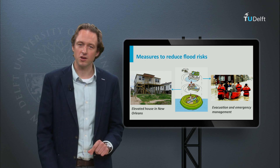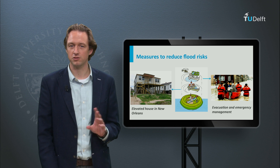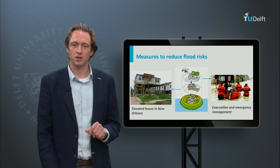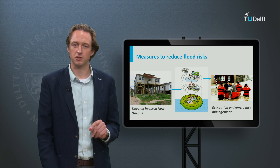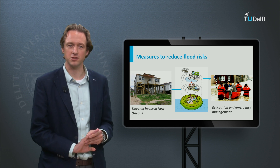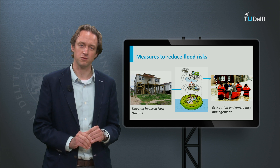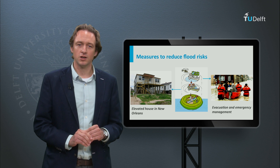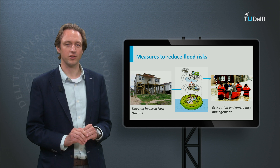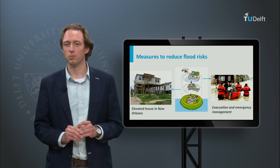So far we have discussed measures for prevention of floods such as dikes, barriers, and room for rivers. In addition, measures can be taken to limit the consequences. Examples are raising houses to reduce damages and evacuation and emergency plans to limit loss of life due to floods.